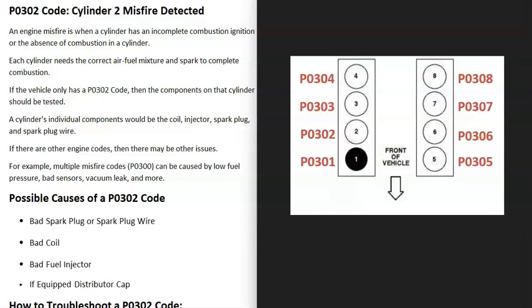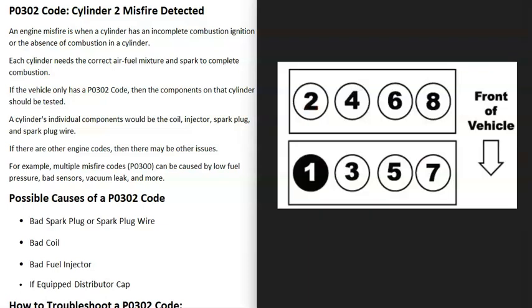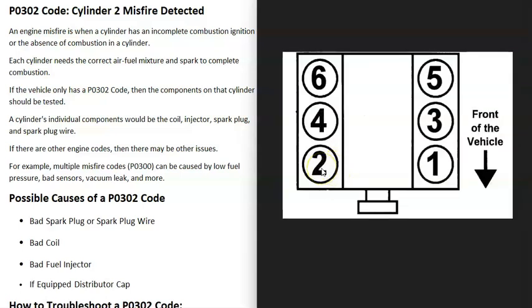If you get a P0301, that's cylinder one. P0303 is cylinder three, and so on. If you Google your engine along with firing order or cylinder location, you should be able to locate cylinder number two on your particular vehicle. That's the cylinder the computer sees a problem with.